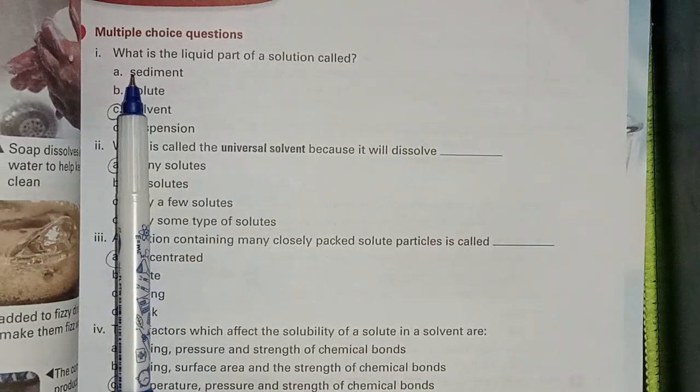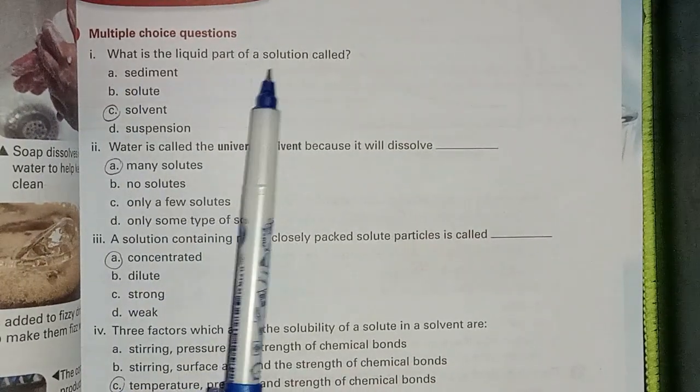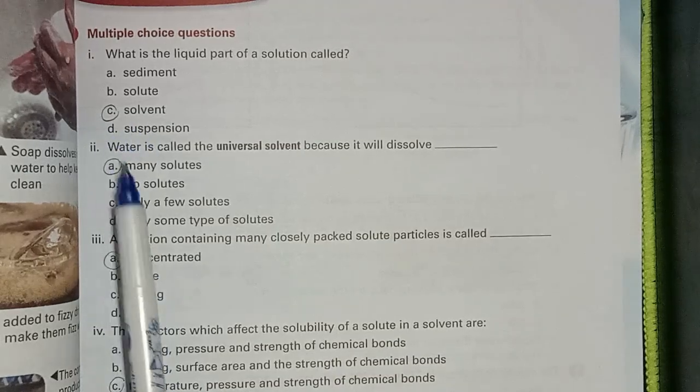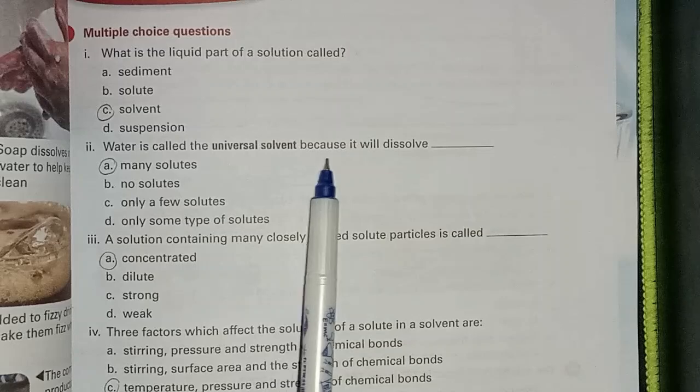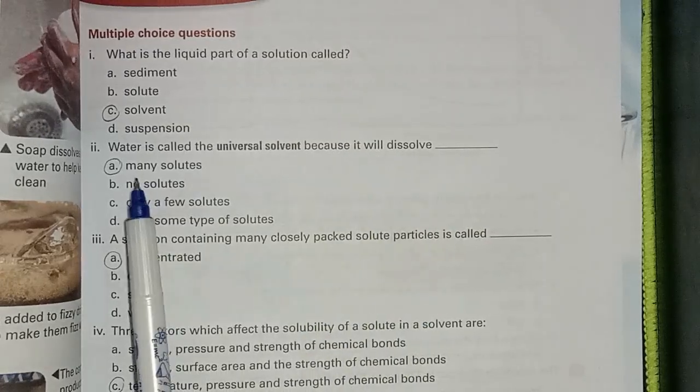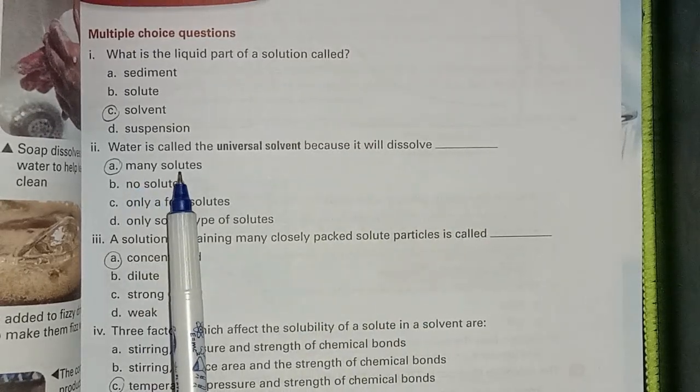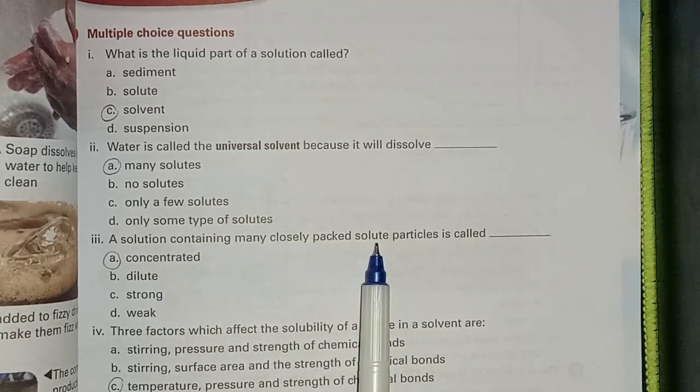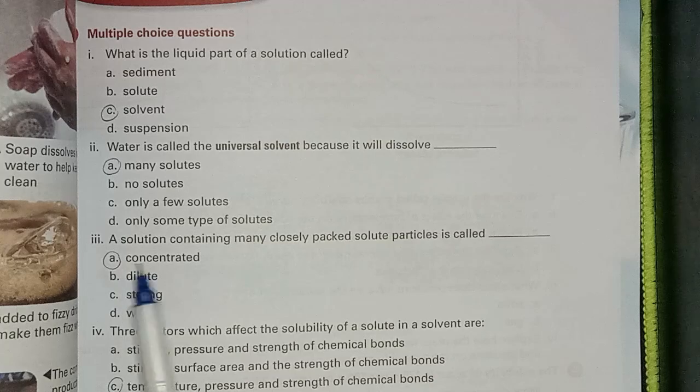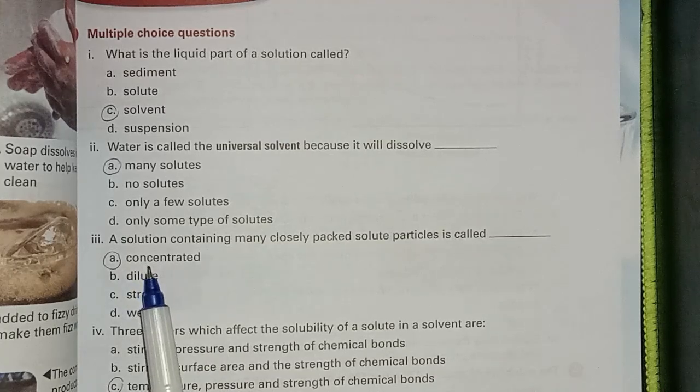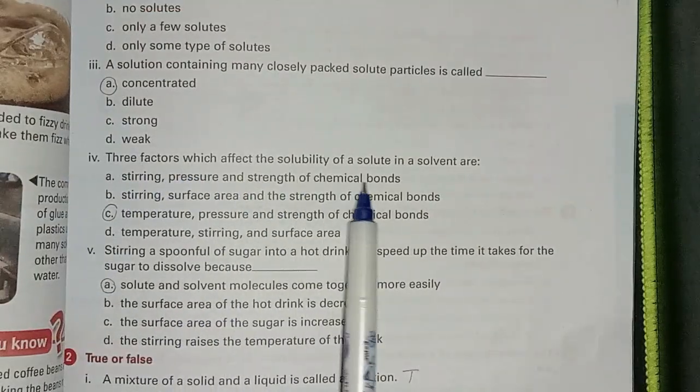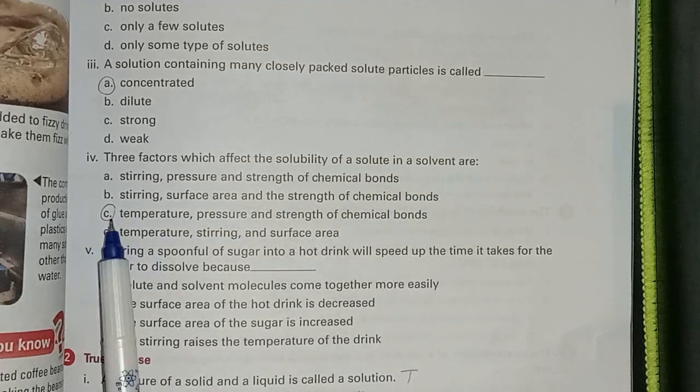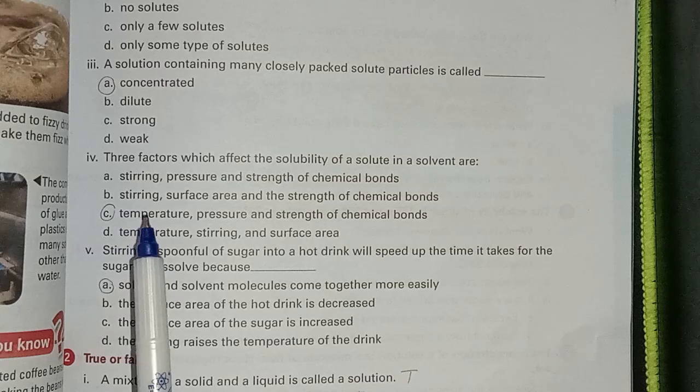Multiple choice questions: Which is the liquid part of solution called? Answer is option C, solvent. What is called a universal solvent? Because it will dissolve many solutes. Next, a solution containing many closely packed solute particles is called concentrated. Three factors which affect the solubility of a solute in the solvent are option C: temperature, pressure and strength of chemical bonds.